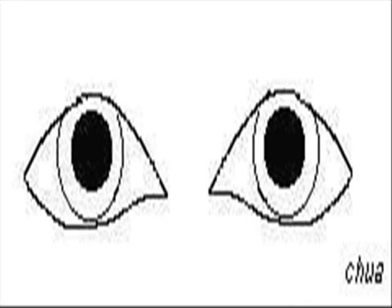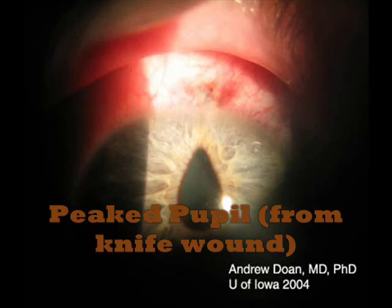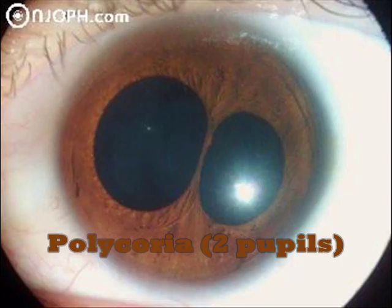Now I'm going to talk about anisocoria, which is what I showed myself having at the beginning of the video — when one of my pupils was way bigger than the other. Anisocoria can mean a lot of different things. It could be completely normal, as some people just have different-sized pupils. It could be drug-induced, or the patient could have Horner's syndrome. Another thing we look for is light-near dissociation, where pupils react to accommodation but not to light, which could indicate Adie's tonic pupil or Argyll Robertson pupil — a sign of tertiary neurosyphilis. There are tests to figure out why a person has anisocoria. The first R stands for round — pupils can be misshapen due to trauma or other diseases.